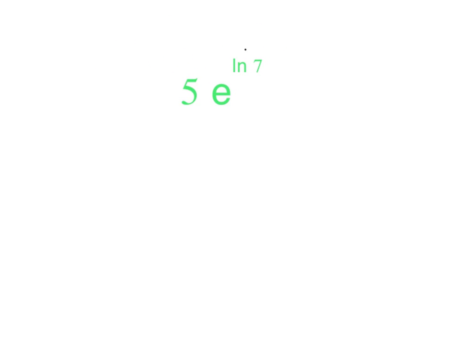5e to the ln of 7. Once again, e to the ln are gone, that leaves us with 5 times 7 or 35.